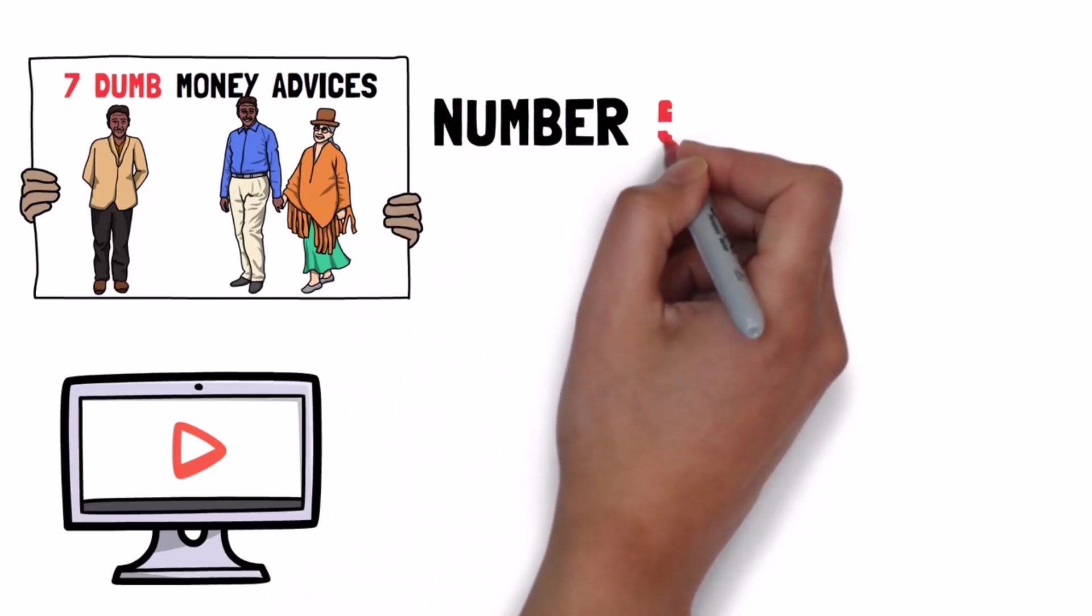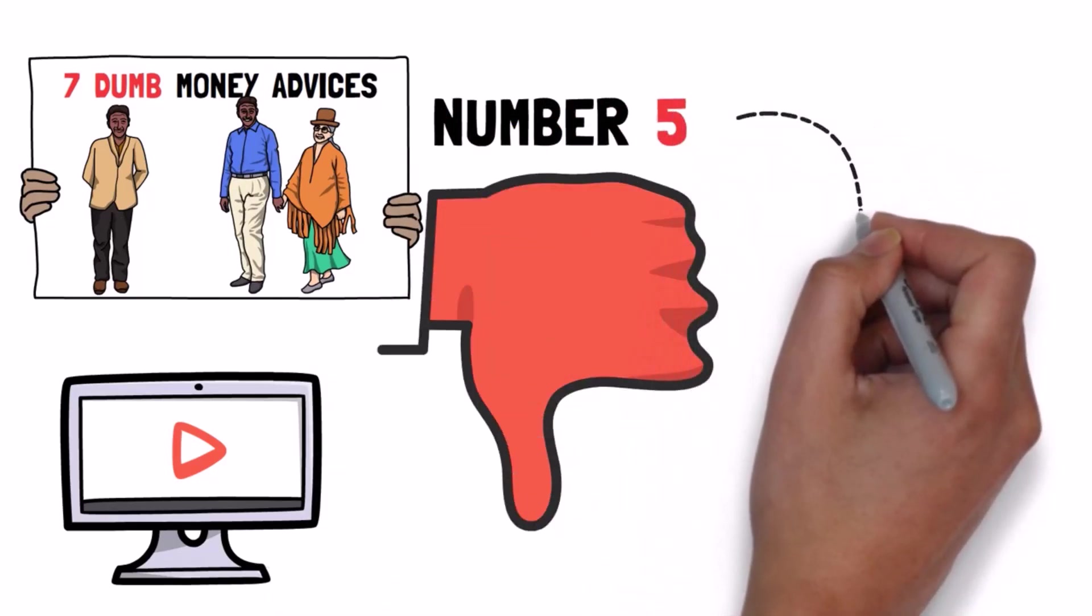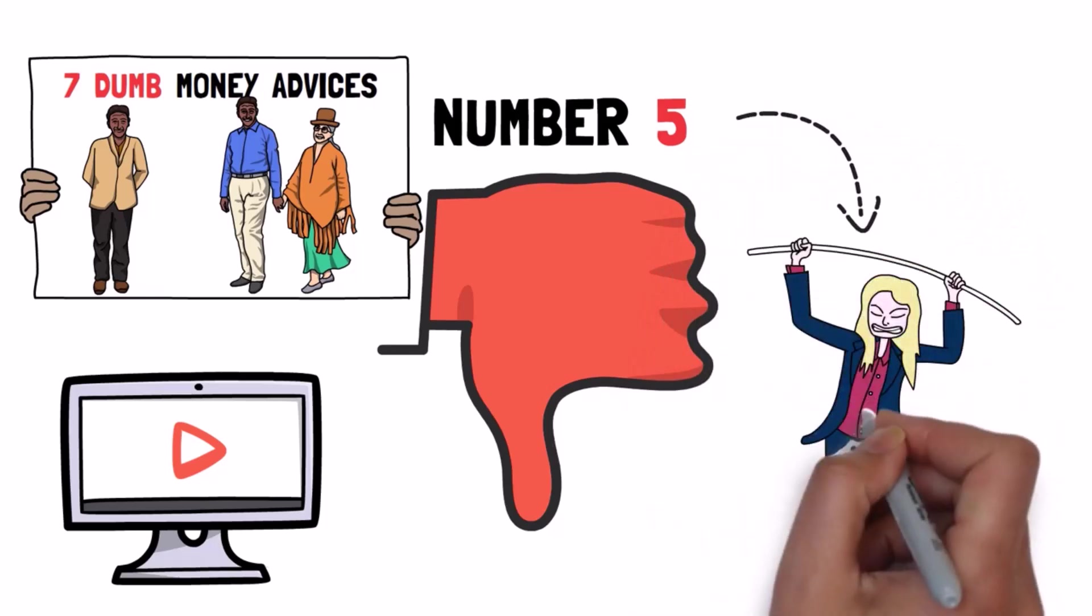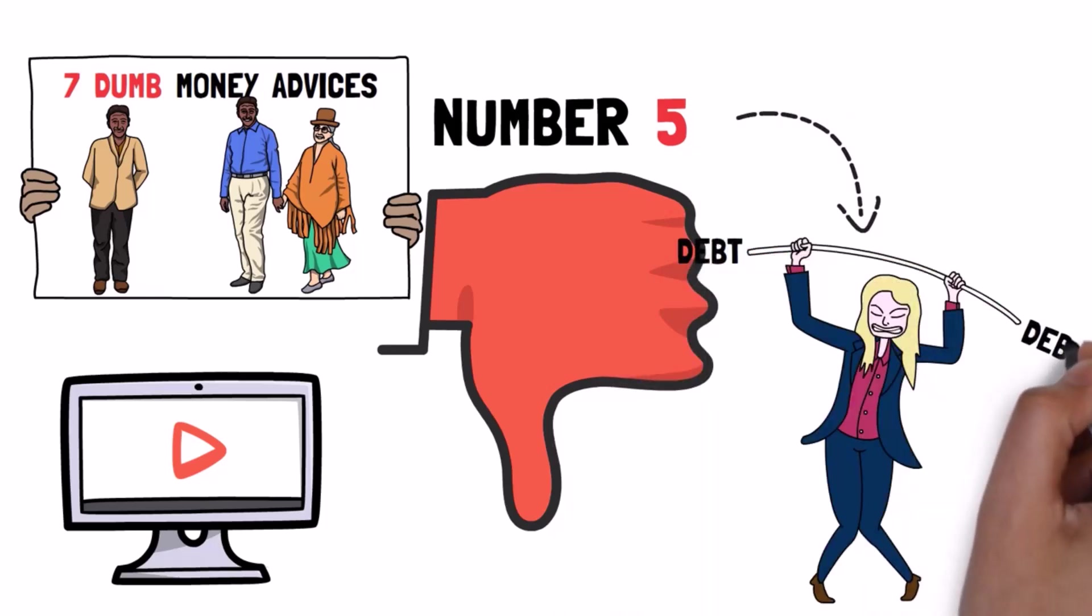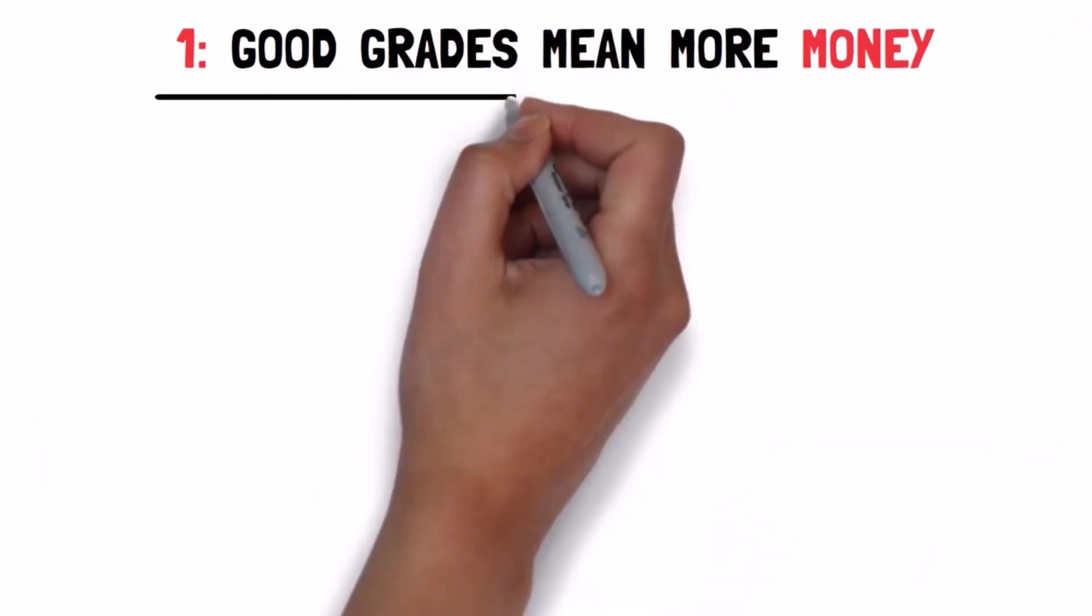The only spoiler I give you is that number 5 is one of the worst ones, since this alone is probably the major cause of 99% of people being submerged by debt. Number 1. Good grades mean more money.